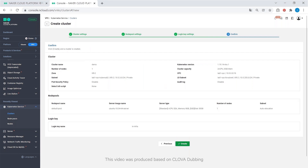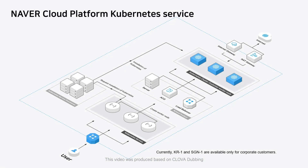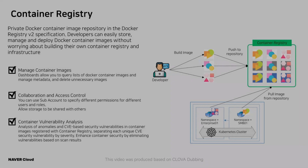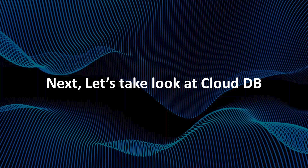As with Kubernetes Service, PaaS services provide you with a fundamental platform infrastructure for development and implementation of your services. We also provide the ability to easily store and manage container images in your private Docker registry and deploy to the Naver Cloud Platform.